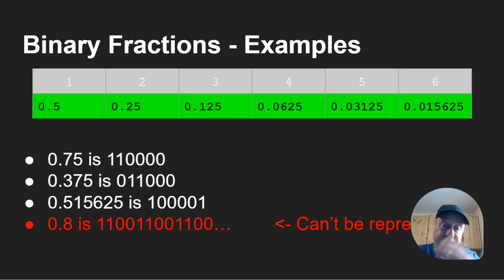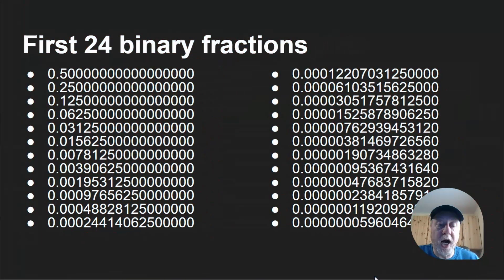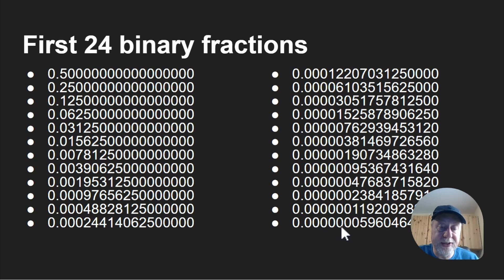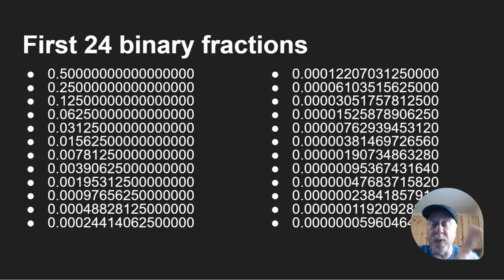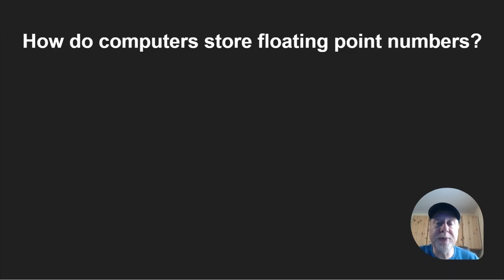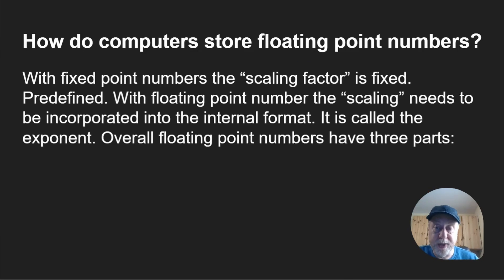Here is a list of the first 24 binary fractions: 0.5, 0.25, 0.125, all the way up through 24 of them until you get to 0.000000059604 and so on. Why 24? That's the number used when dealing with 32-bit floating point numbers, which we'll talk about in a moment.